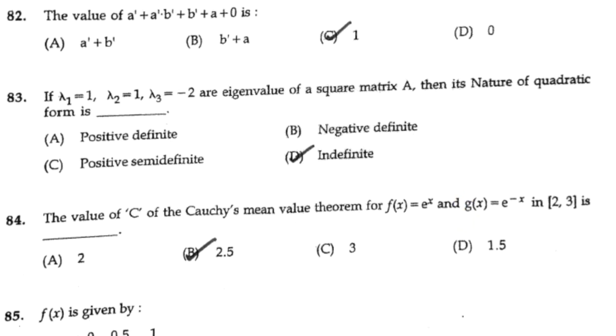If λ₁ = 1, λ₂ = 1, and λ₃ = -2 are the eigenvalues of a square matrix E, then the nature of its quadratic form is indefinite.